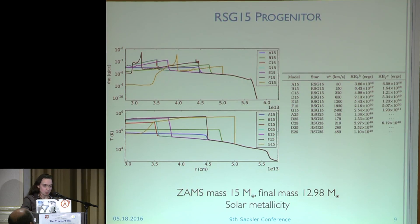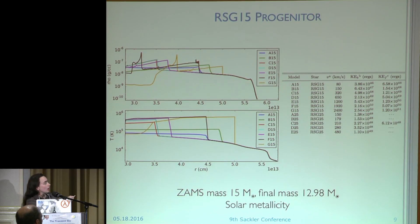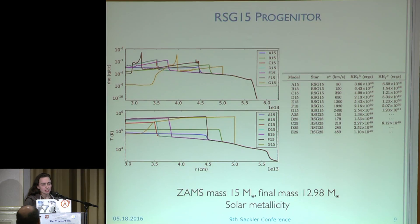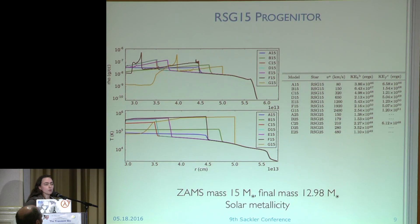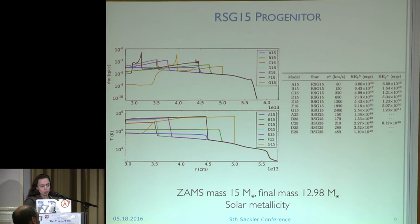This is the progenitor I spent most of my time modeling: a 15 solar mass red supergiant with a final mass of about 13 solar masses and approximately solar metallicity. This shows the density and temperature for just the outer region we care about. It has a final radius of about 6 times 10 to the 13 centimeters. We tested quite a range of energies: the yellow curve is our highest energy model with a final kinetic energy of 1.2 times 10 to the 51, and the blue curve is our lowest energy model at 6 times 10 to the 46th. It's important to note that kinetic energy at breakout is not the same as final kinetic energy — they are different quantities, and the analytic predictions only work if you use the final kinetic energy.